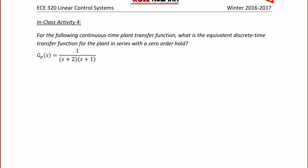So now let's start the final activity for today's lecture on zero order hold and sampling plants. For the following continuous time plant transfer function, what is the equivalent discrete time transfer function for a plant in series with a zero order hold? g_p(s) is equal to 1 over (s + 2)(s + 1). So g_i(s) equals g_p(s)/s, which equals 1 over s(s + 2)(s + 1).